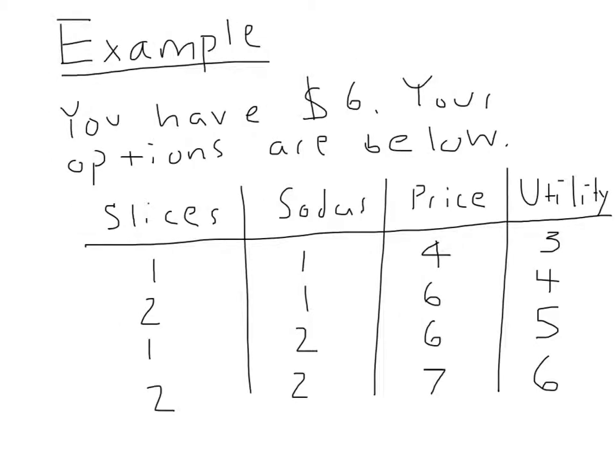So we can do a simple numerical example. Our consumer, we'll call him Steve, has $6, and he has some options listed below in the table about how many slices of pizza he can buy and how many cans of soda. He could buy one slice of pizza and one can of soda, and that'll cost him $4.